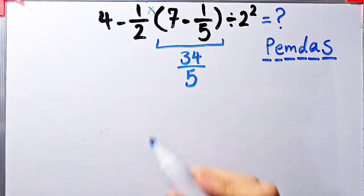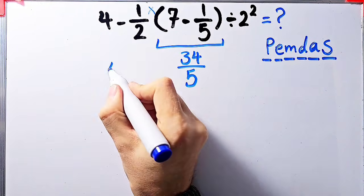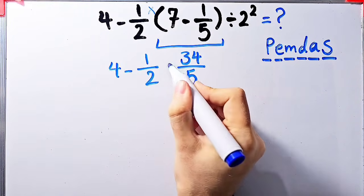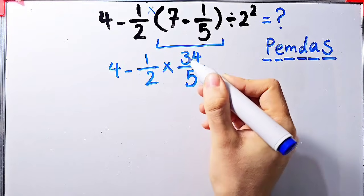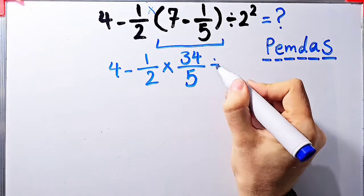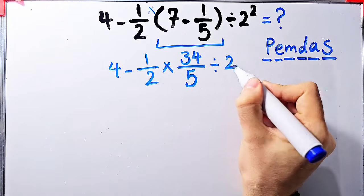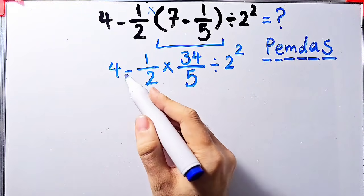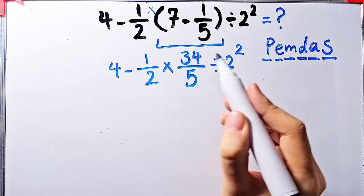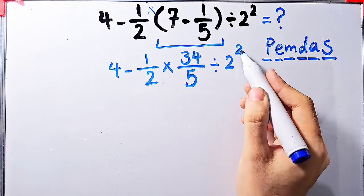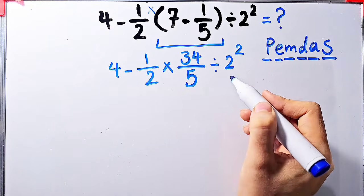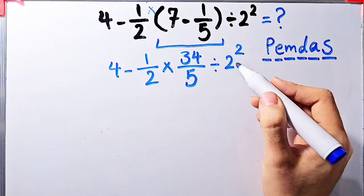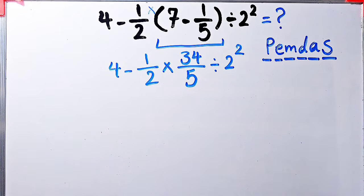Now the question is 4 minus 1 over 2, then times 34 over 5 divided by 2 to the power of 2. Now we have subtraction, multiplication, division, and exponent. First, we simplify this exponent. 2 to the power of 2 equals 4.